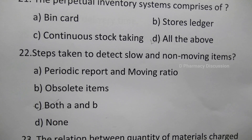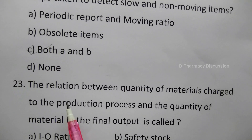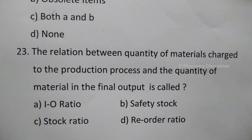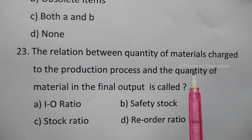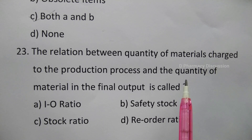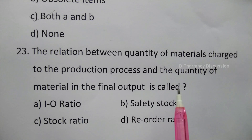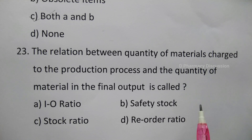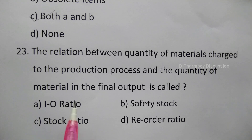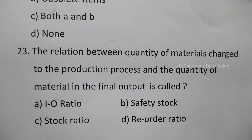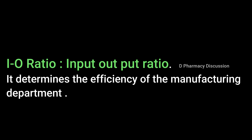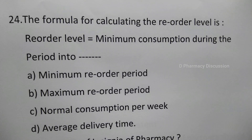Question 23: The relation between quantities of materials charged to the production process and the quantities of materials in the final output is called — option A: IO ratio, B: safety stock, C: stock ratio, D: reorder ratio. The correct answer is option A, IO ratio — that is input-output ratio, which determines the efficiency of the manufacturing department.